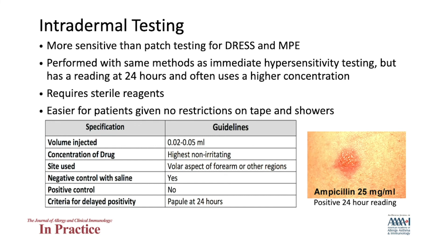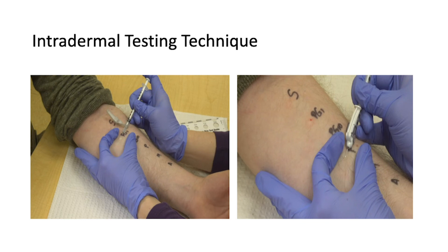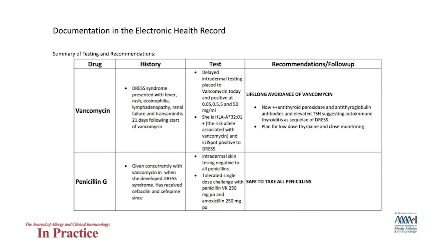Intradermal testing is performed by the same technique for delayed testing as for immediate testing. The concentrations needed may be higher, and reading occurs at 24 hours, with delayed readings out to 72 hours sometimes necessary. Testing is typically performed on the volar aspect of the forearm, and intradermal volumes used are typically 0.02 to 0.05 milliliters. There is no standardized positive control for delayed intradermal testing. The criteria for a positive is simply a papule at 24 hours.